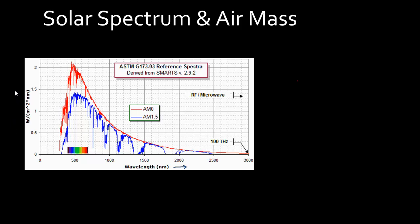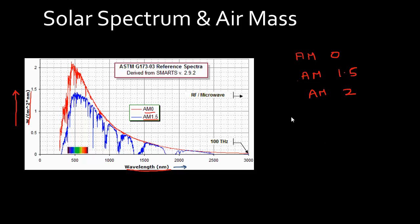Plotted here again is the spectral irradiance in watt per meter square per nanometer, as a function of wavelength. Many times when you look at these pictures you see captions like AM 0, AM 1.5, or AM 2. And sometimes, when people want to confuse you even more, you'll see another letter added — like AM 1.5 G or AM 2.0 D. So what does this correspond to?